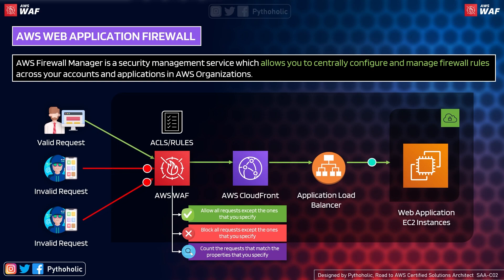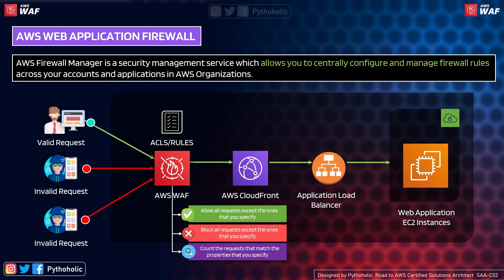The third behavior is 'count the requests that match the property that you specify.' This is a tricky but important one. Suppose your website is going through a change and a new set of properties are being added to the request metadata. Instead of allowing or blocking all requests, you can count the properties using AWS WAF so you don't have to provide restrictions based on the application itself. Once you've confirmed the correct properties, you can then switch the behavior to allow or block.